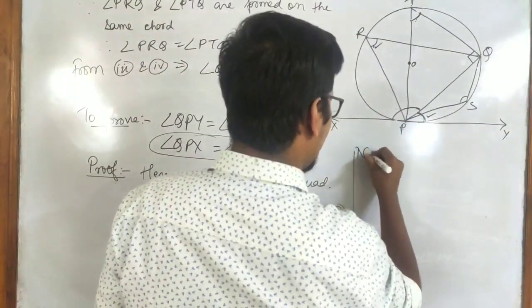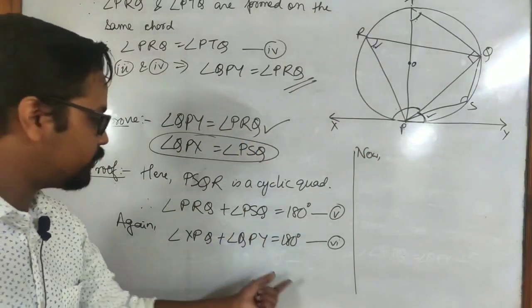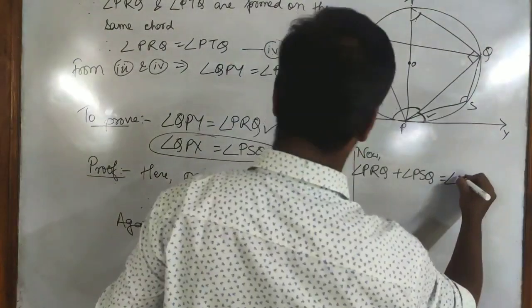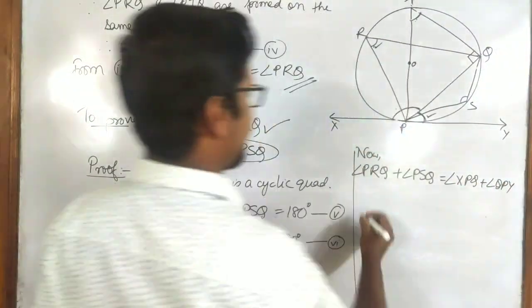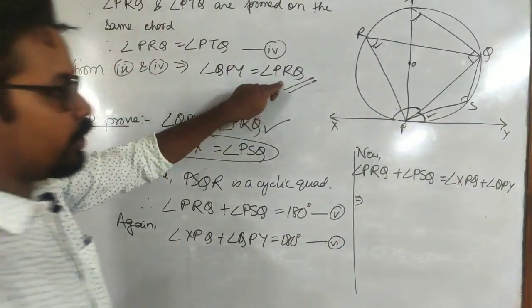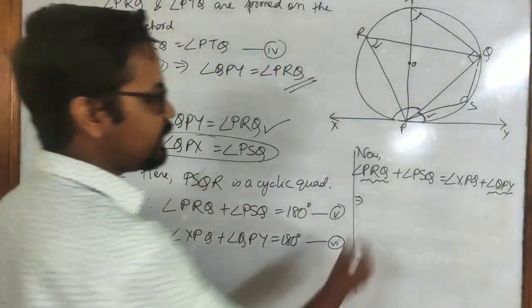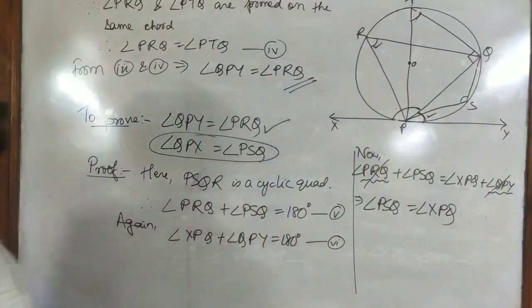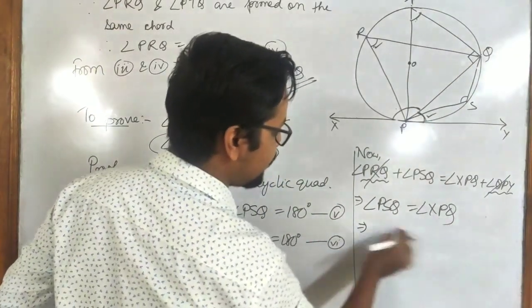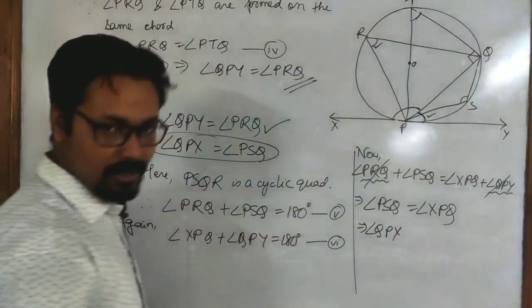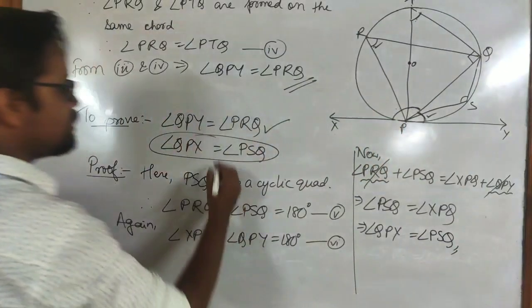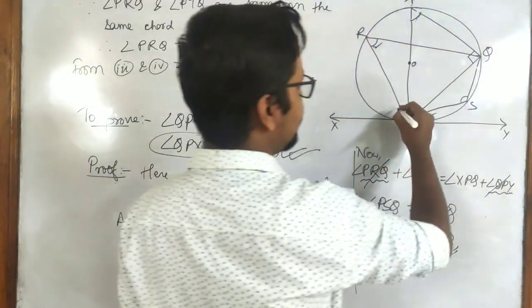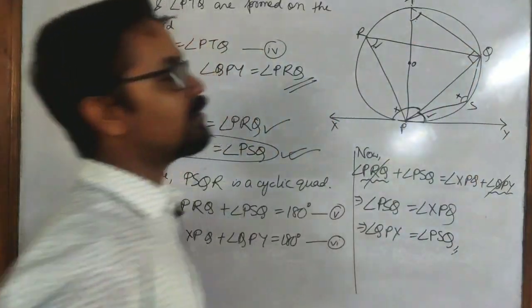Also, XPY is a straight line so it forms a 180° angle. Splitting it: angle XPQ + angle QPY = 180°. Let this be equation (6) — they are a linear pair. From equations (5) and (6), both equal 180°, so: angle PRQ + angle PSQ = angle XPQ + angle QPY. Since angle PRQ = angle QPY (from equation 3), they cancel, leaving angle PSQ = angle XPQ, which is angle QPX = angle PSQ. Proved.